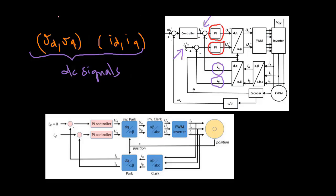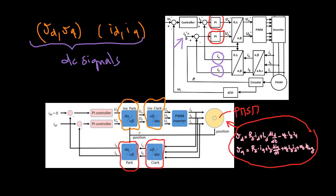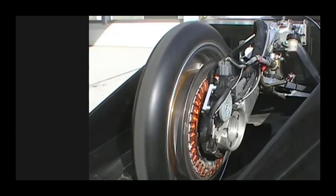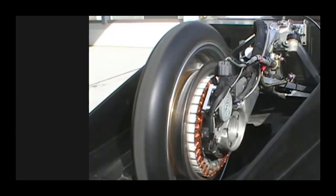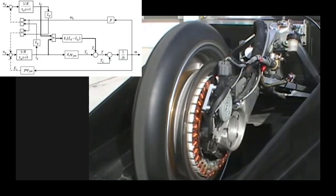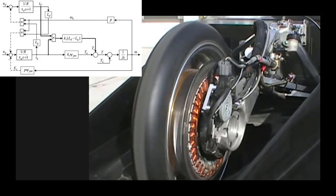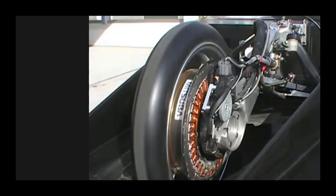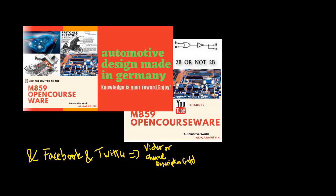In this video we have learned the Park-Clark transformation and the inverse Park-Clark transformation. Additionally, we have modeled the electrical part of the PMSM. To complete the model of the PMSM, we will model in the next video the mechanical part using the electromagnetic torque equation, after which we will be able to simulate the PMSM. Thank you for watching — please like the video if you enjoyed it, and subscribe to my channel to stay up to date.